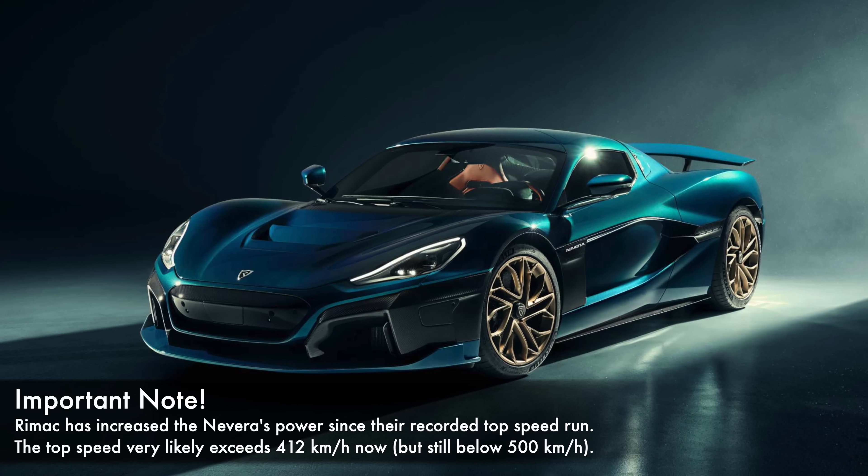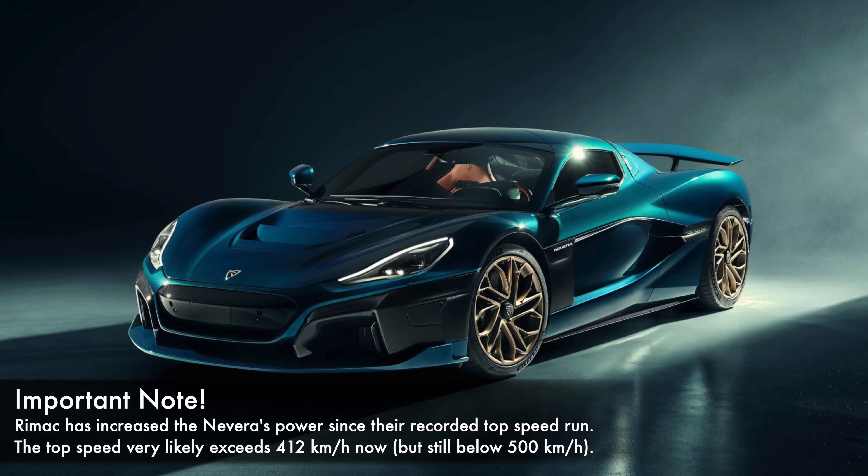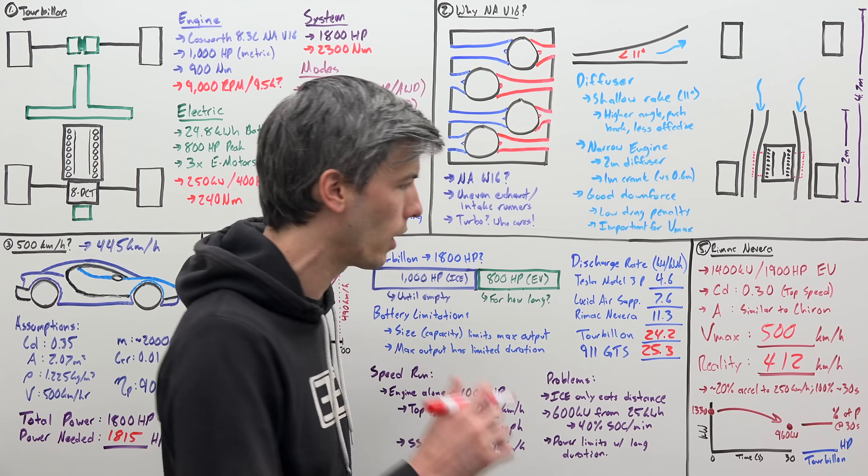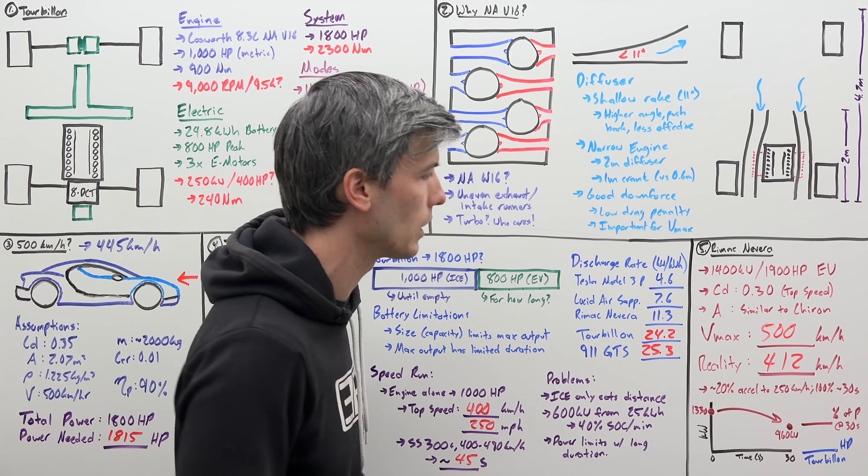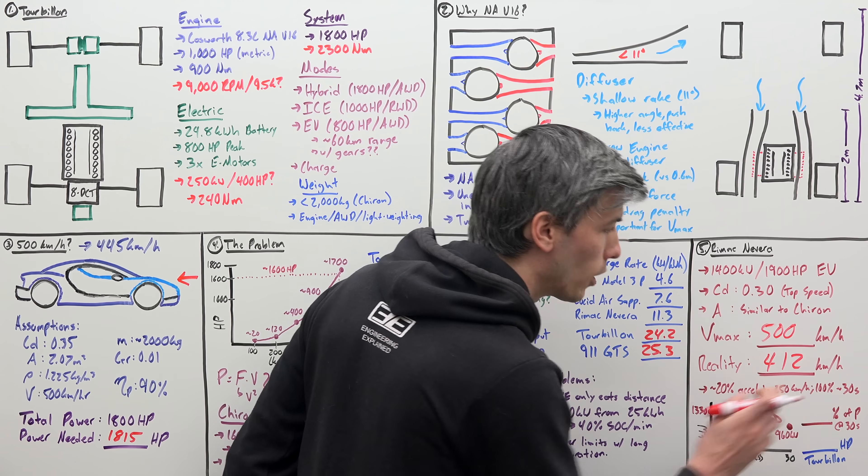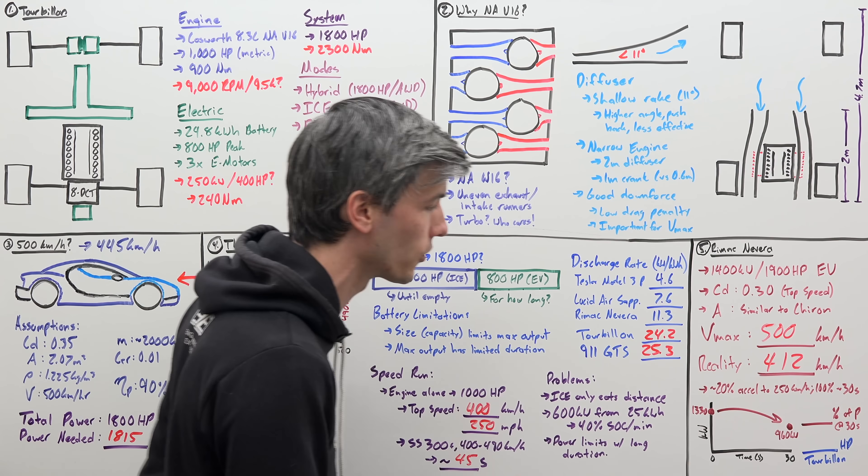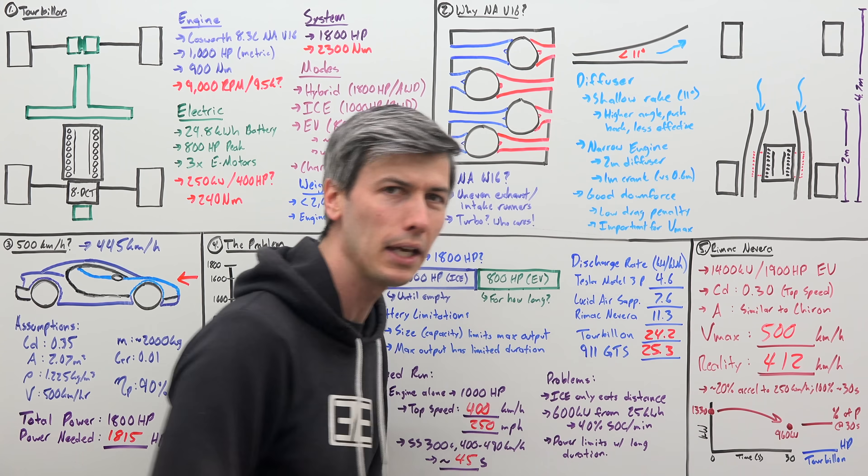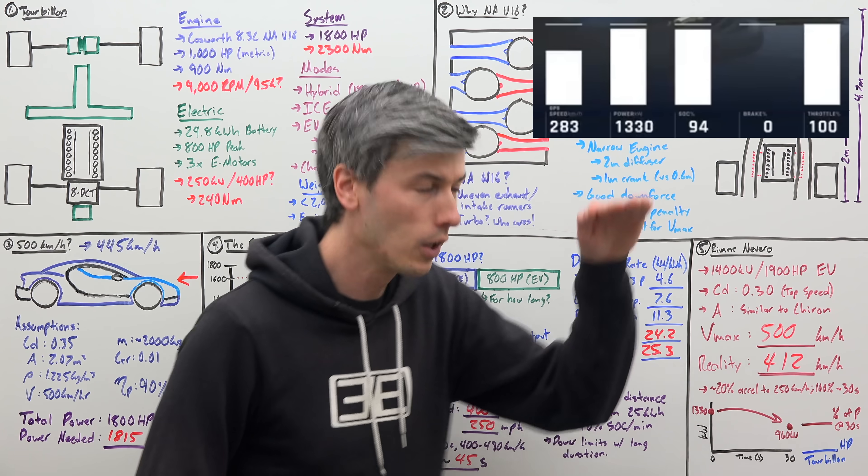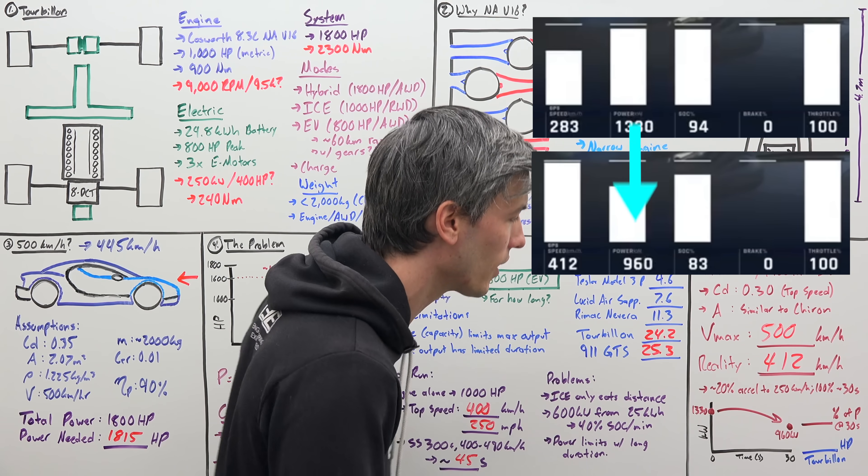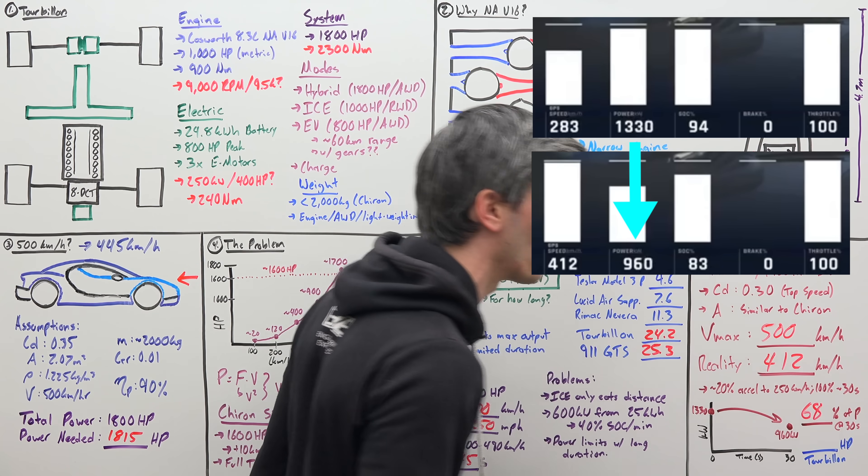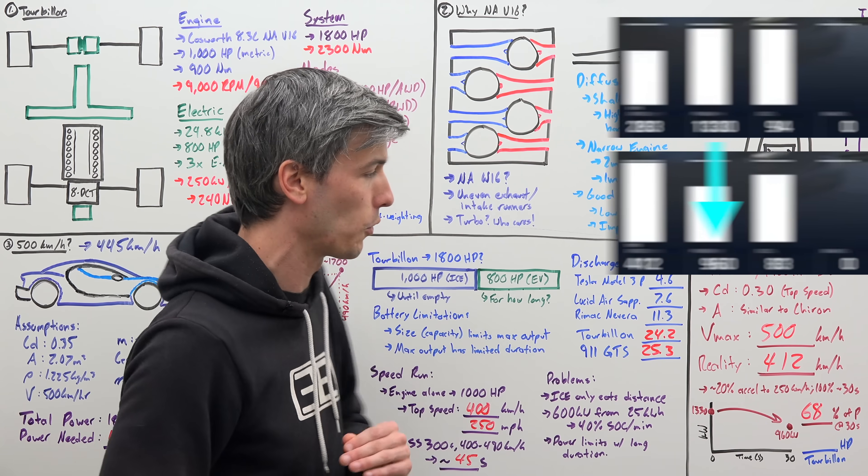Well, you can look at the strategy that they used. So they kept it at about 20% throttle until they reached 250 kilometers per hour. Impressive that it can do that with 20% throttle. And then they used 100% throttle for about 30 seconds. And what you saw is, the peak power output went from about 1330 kilowatts by the end of that 30 seconds was all the way down to 960 kilowatts. In other words, it was at 68% of its rated power after 30 seconds of full throttle.